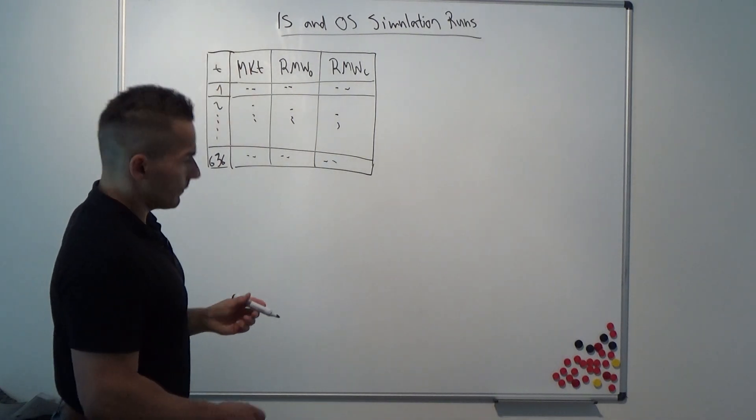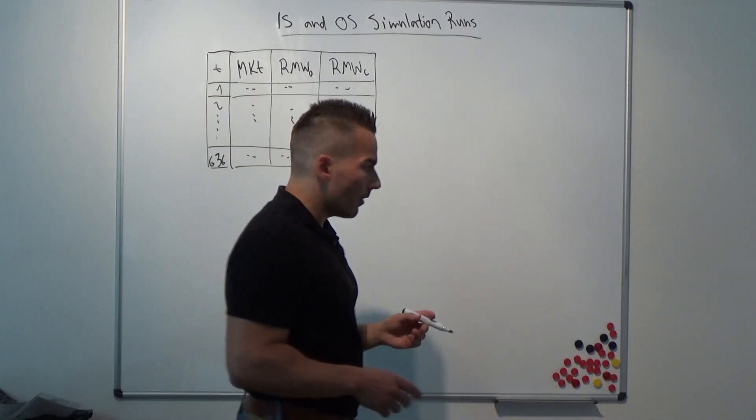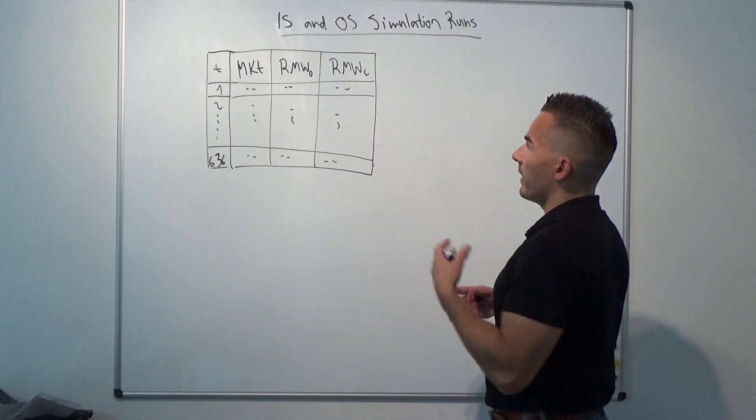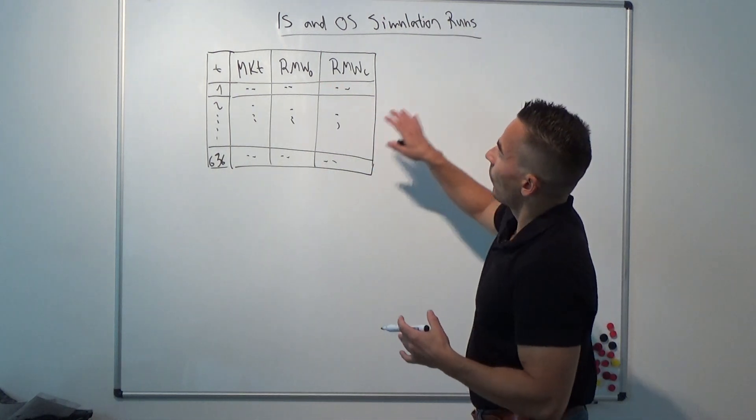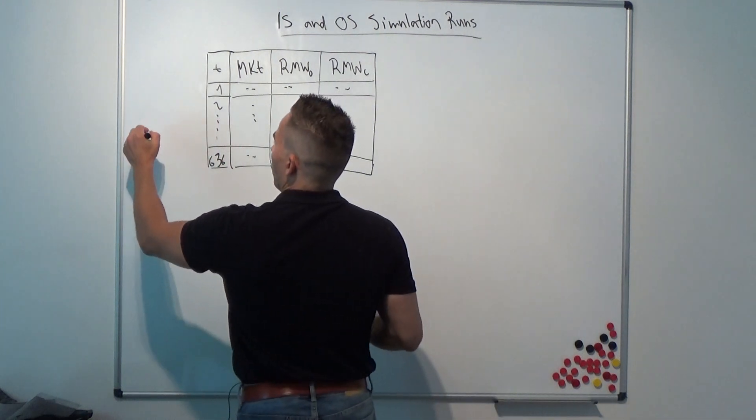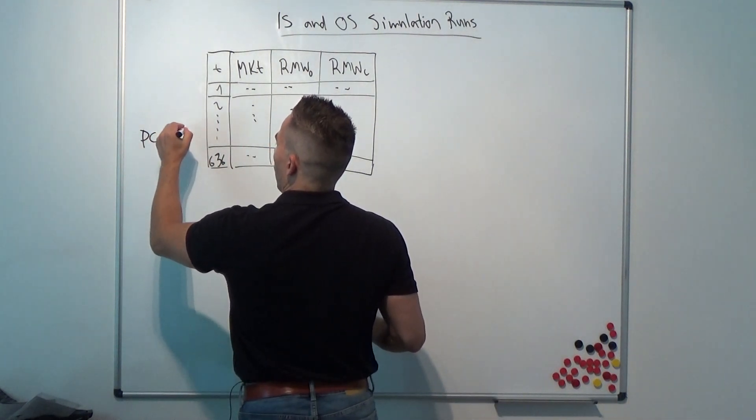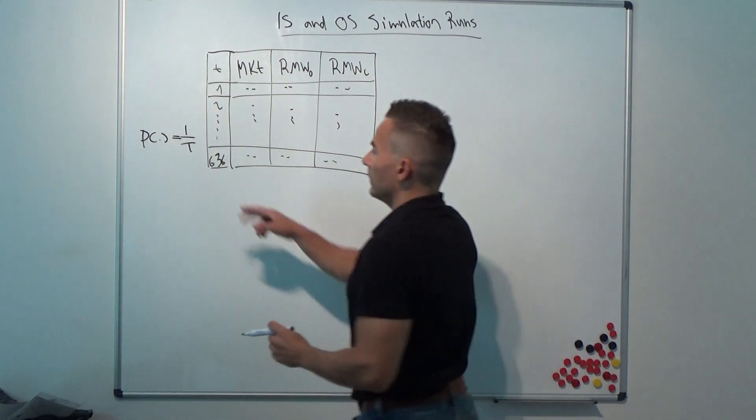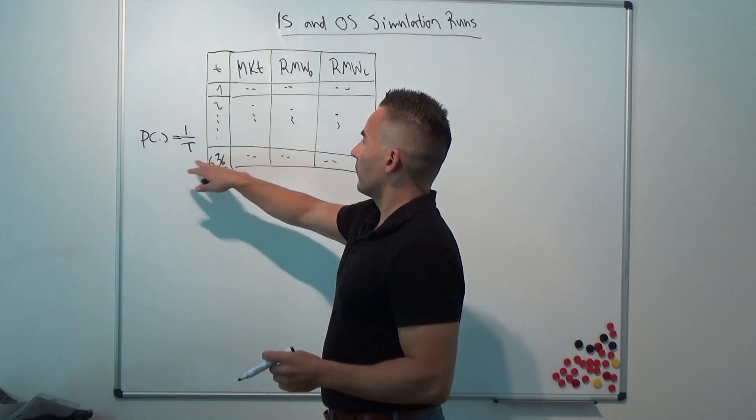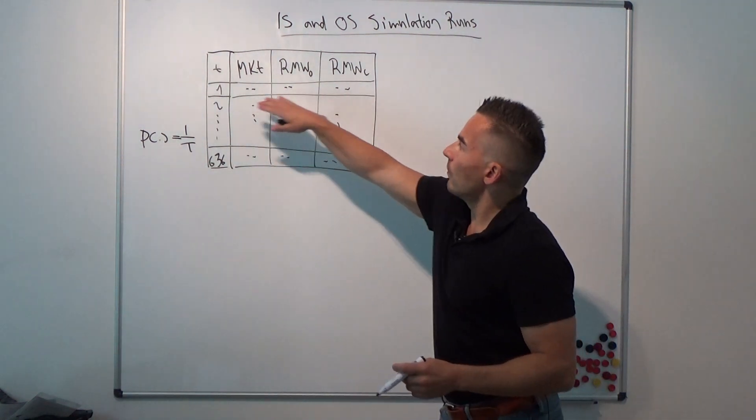So again what we do is we draw randomly with replacement, one of these lines with probability p equals 1 over t, and t is 636. So with probability 1 over 636, we draw randomly a row.